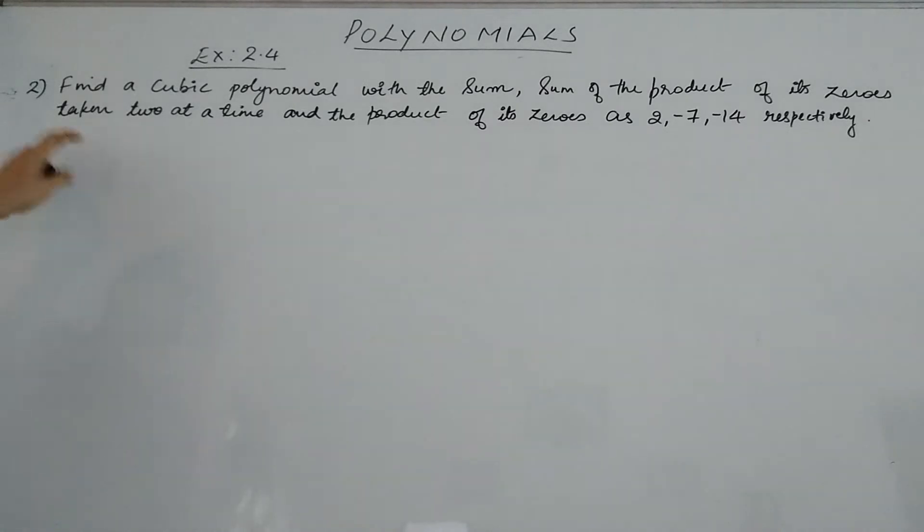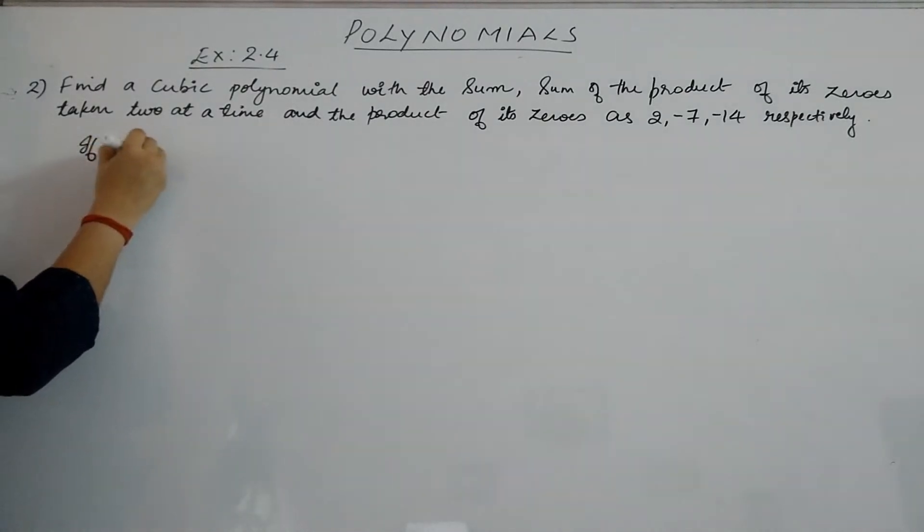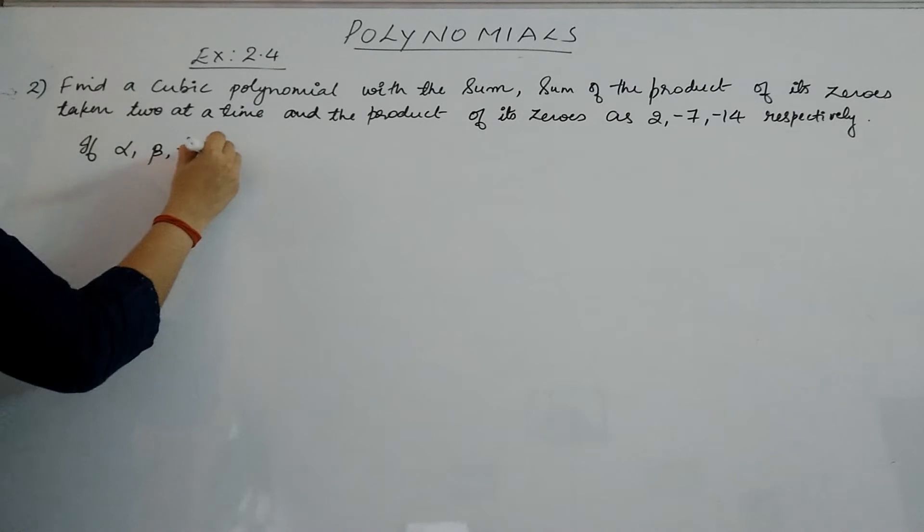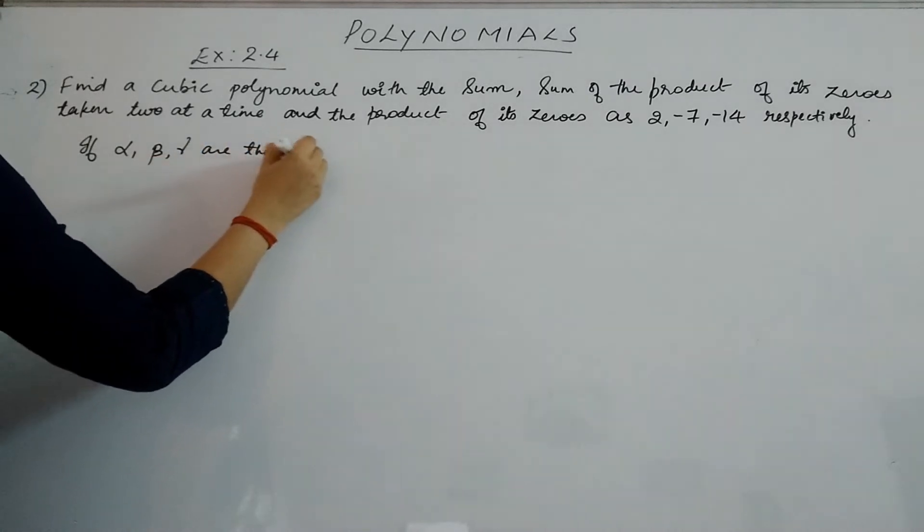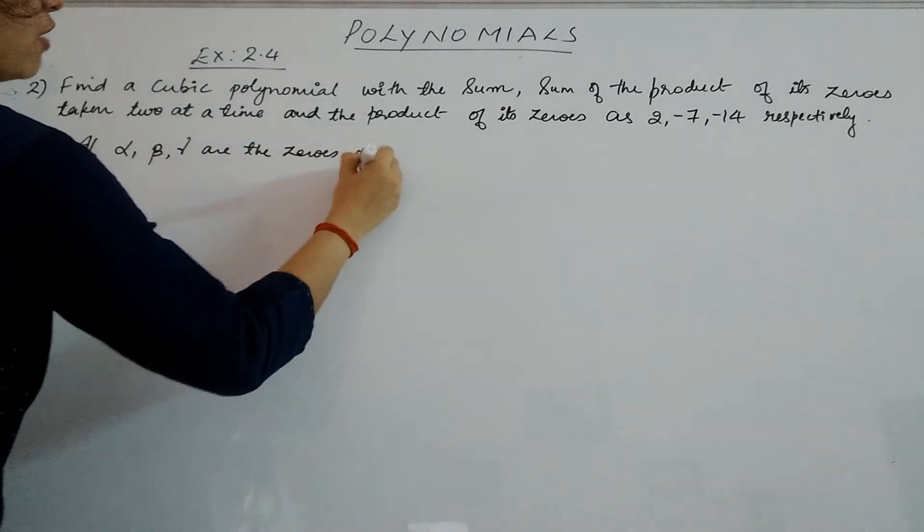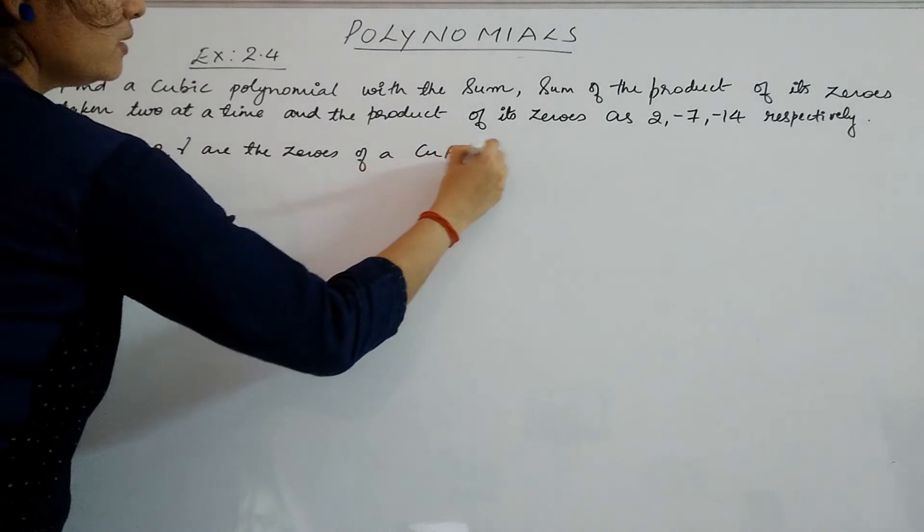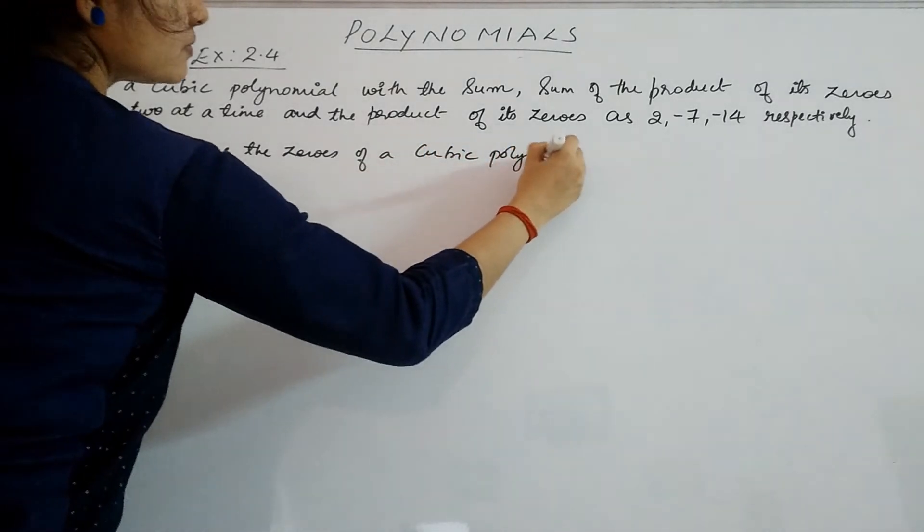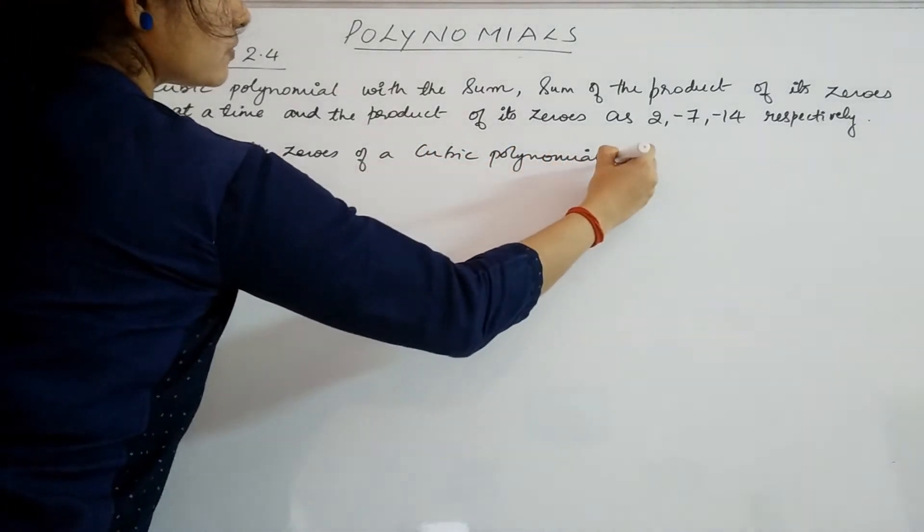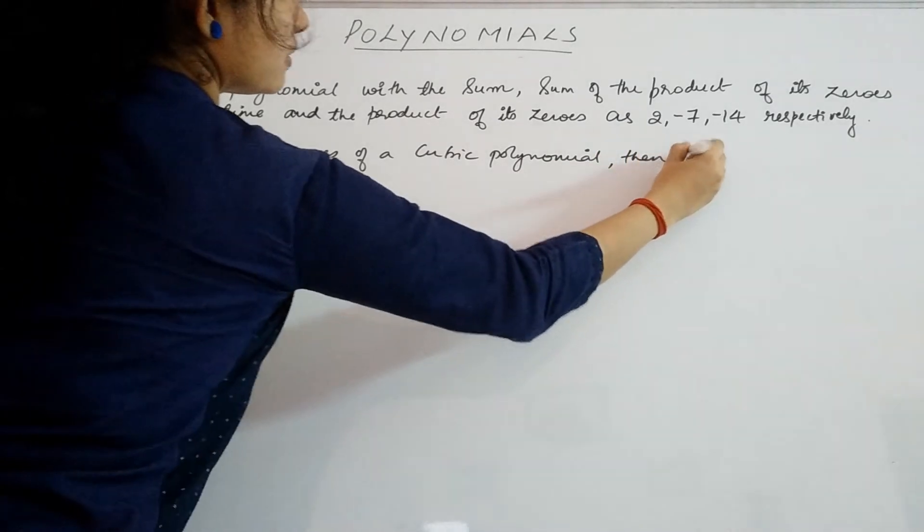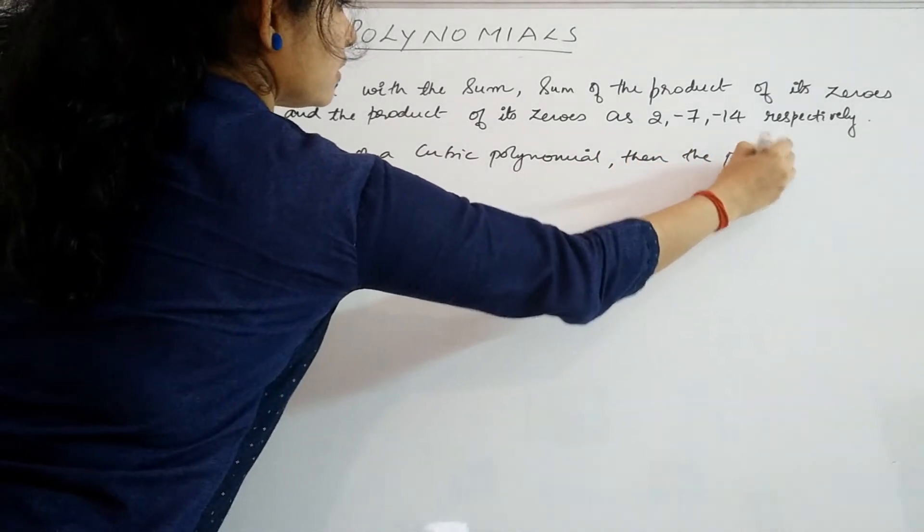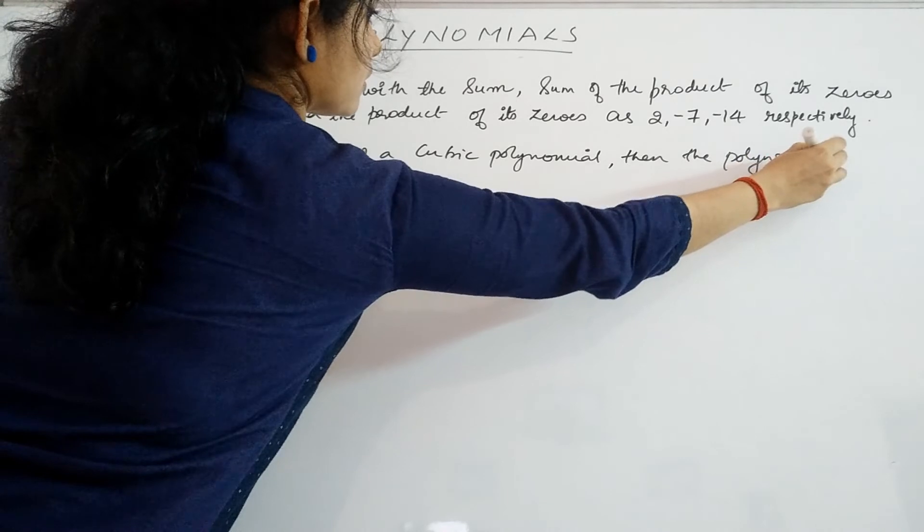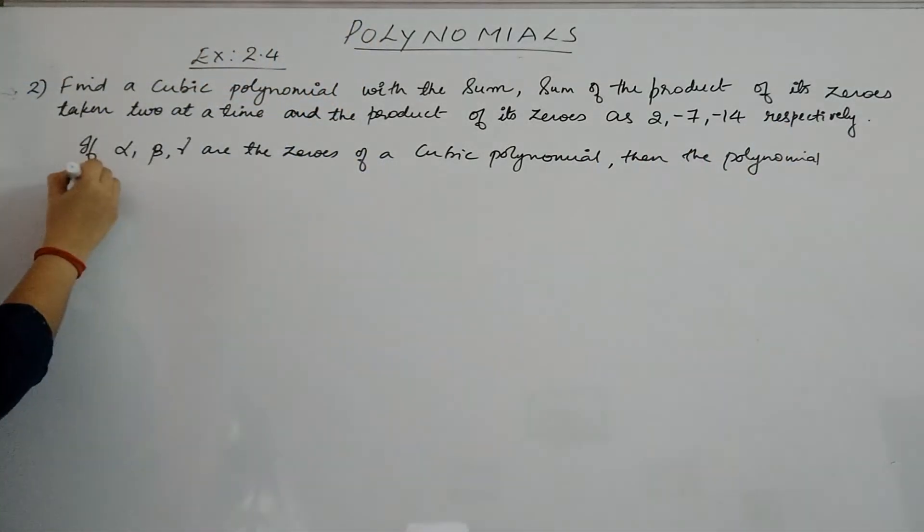In order to solve this type of problem, first we need to know that if α, β, γ are the zeros of a cubic polynomial, then the polynomial can be written as: